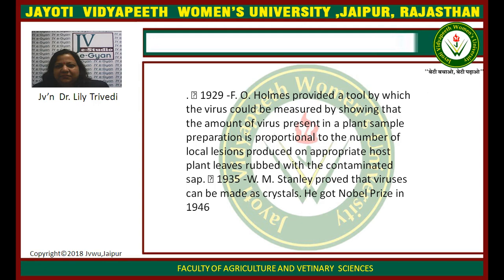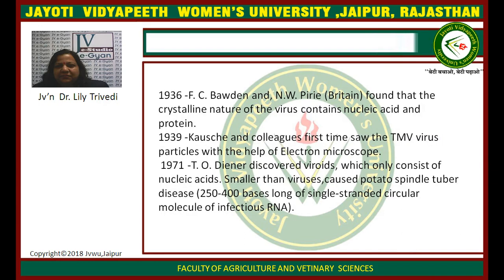In 1935, W.M. Stanley proved that viruses can be crystallized, and he received a Nobel Prize for this work in 1946. In 1936, F.C. Borden and N.W. Pirie found that the crystalline virus contains nucleic acid and proteins. In 1939, Kausche and colleagues for the first time saw TMV virus particles with the help of an electron microscope. In 1971, T.O. Diener discovered viroids, which only consist of nucleic acid. They are smaller than viruses and cause potato spindle tuber disease; they are 250 to 400 bases long, consisting of a single-stranded circular molecule of infectious RNA.